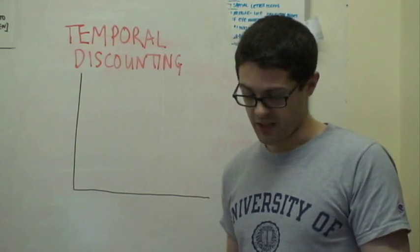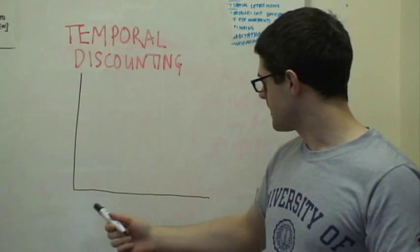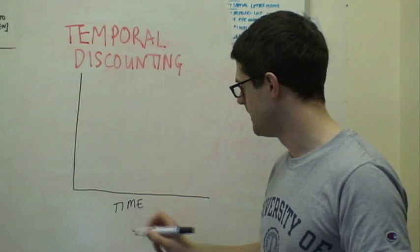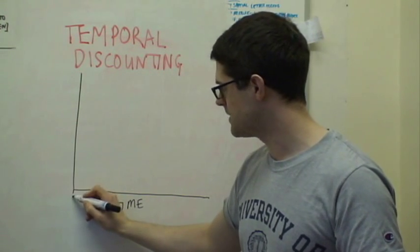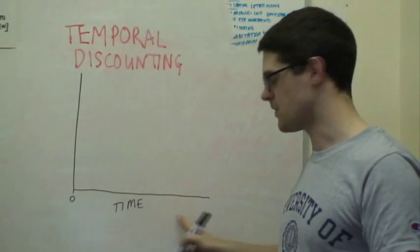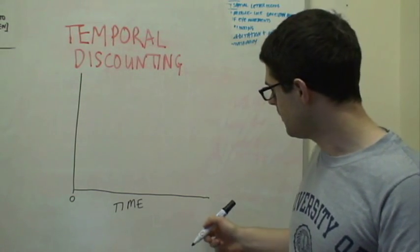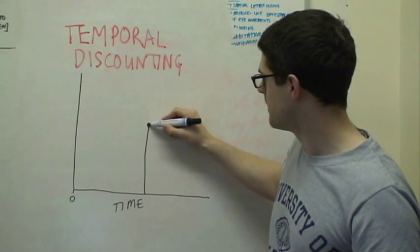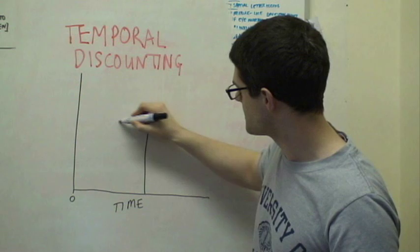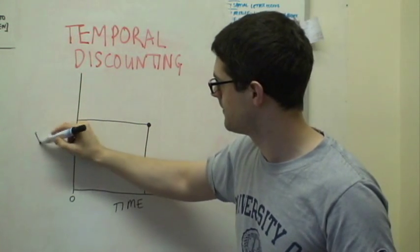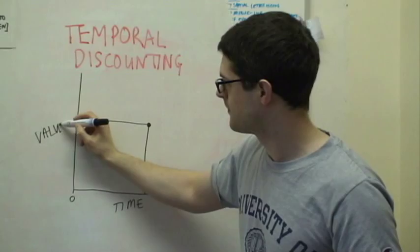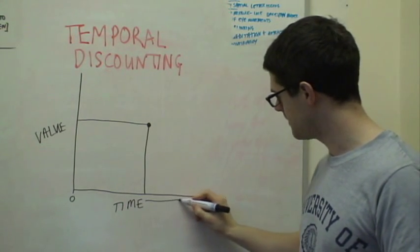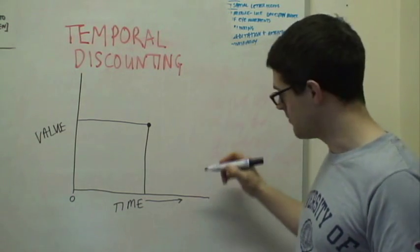So start right from the beginning. Let's explain this graph. Along here we have time, and imagine initially we're right here, and this is off into the future. So what we might have is a bit of a wait to get a reward that has a certain value. But what we could do is wait an extra amount of time and maybe get a bigger reward.